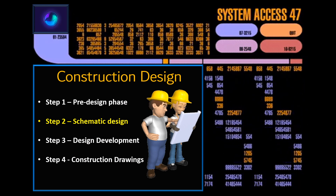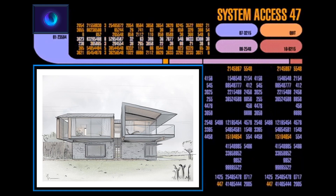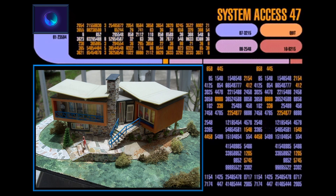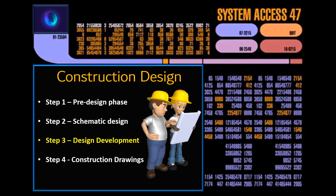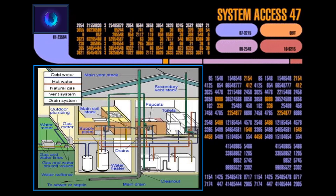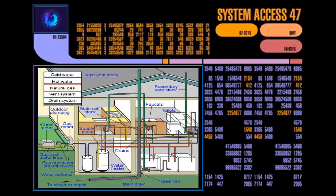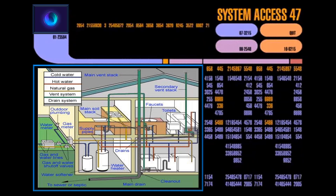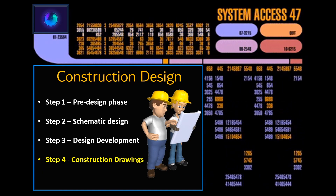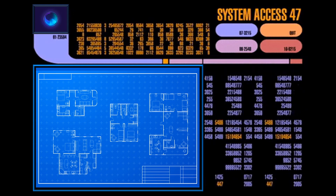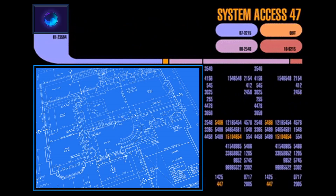The second step of the process involves the schematic design. In this step, you create a vision of what the structure will look like through drawings. Many times, a model of the structure is created to make it easier to see what it will look like. The third step is the design development process. In this step, the designer adds more detailed information obtained from consultants and team members, such as electrical, plumbing, or air ventilation systems engineers. The fourth step is developing the construction drawings that are used by the builders to create the structure and includes all the specific information necessary to complete it.